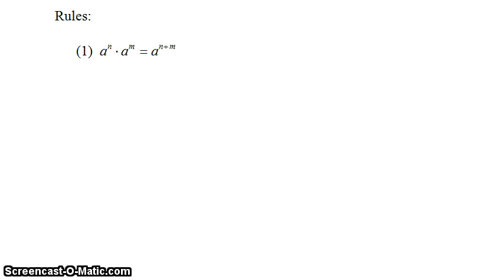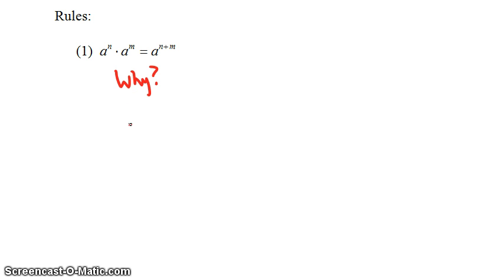Our first rule says that a to the n times a to the m is equal to a to the n plus m. With each of these rules, I'm going to give an example that will hopefully illustrate why the rule works. So let's begin with 7 squared times 7 cubed. According to the rule, the answer should be 7 to the fifth power.